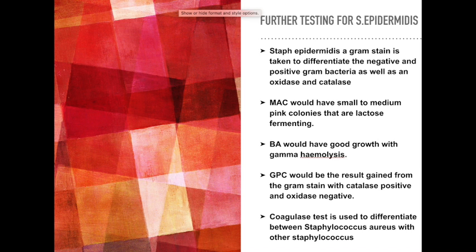Gram-positive cocci would be the result from the gram stain, with catalase positive and oxidase negative. A biochemical test such as the coagulase test is used to differentiate between Staphylococcus aureus and other staphylococci, and the result obtained would be coagulase negative. A confirmatory test would be an API Staph, which will show Staphylococcus epidermidis as the causative agent for a possible circulatory infection that may have caused the sepsis. However, this is highly unlikely as the epidermidis was isolated from only one of the six bottles after two days from the blood culture.